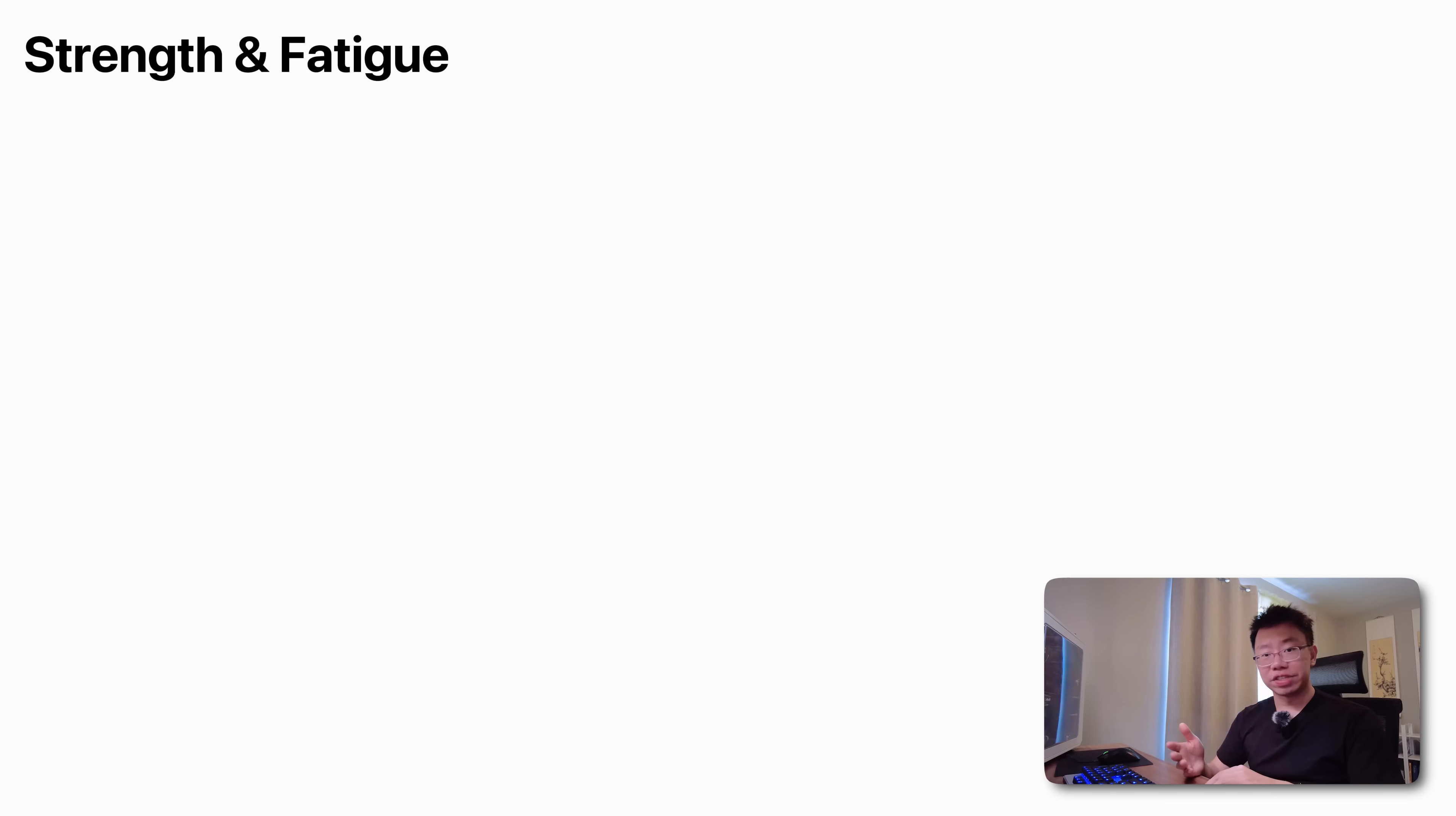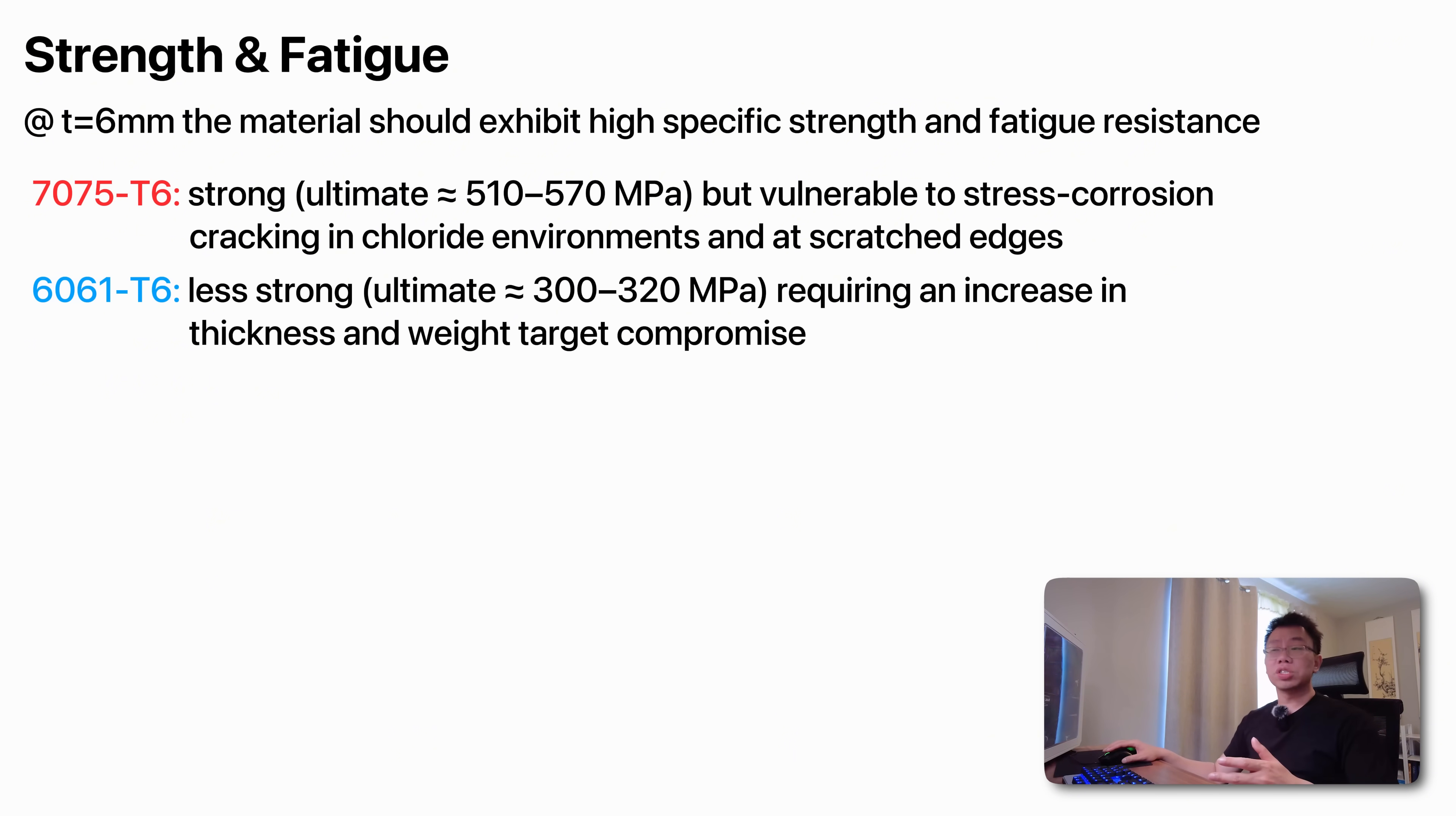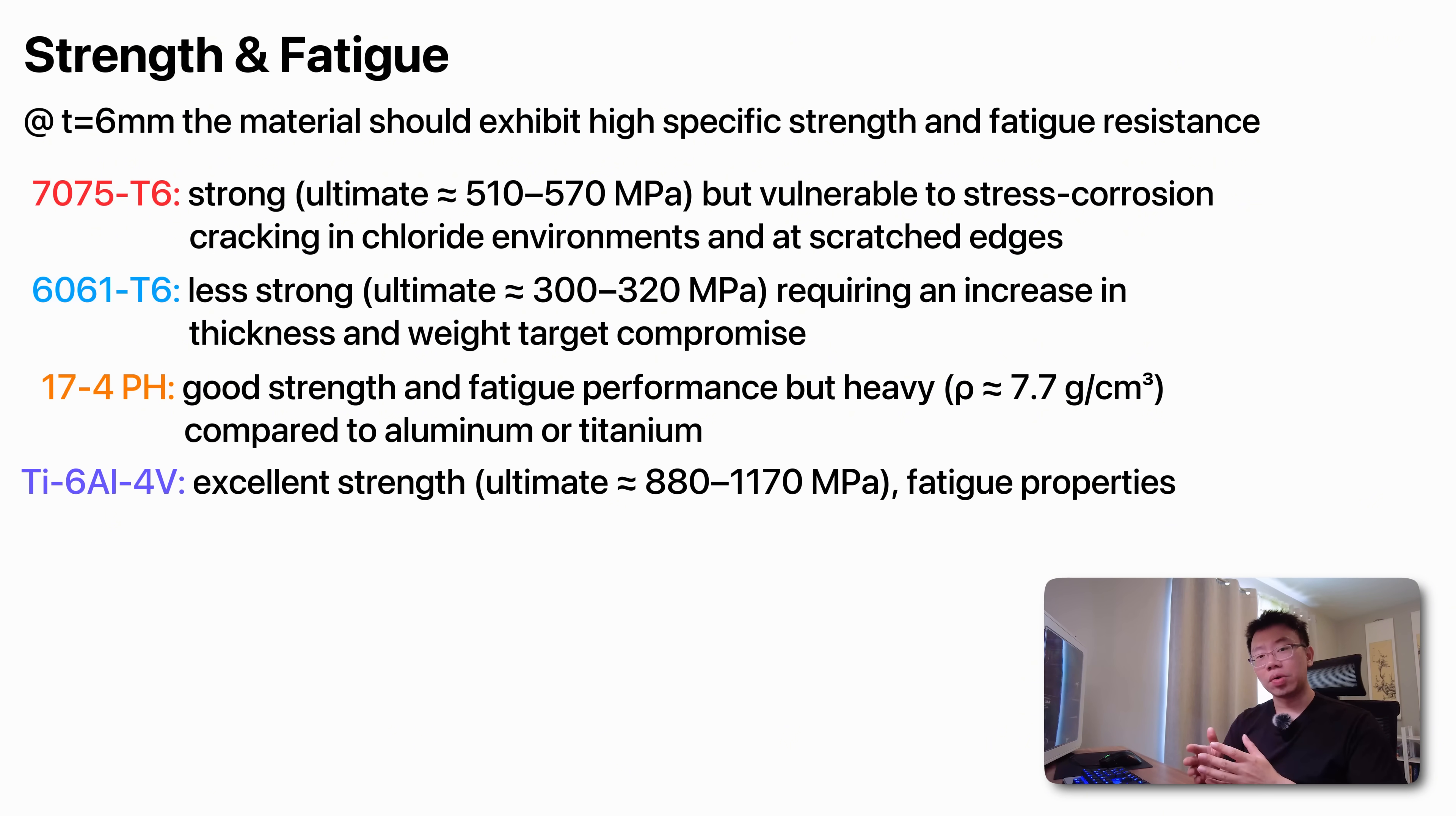Next, think about things like strength and fatigue. At a maximum thickness of 6 millimeters, we need high specific strength and fatigue resistance. 7075 T6 aluminum delivers exceptional strength but is vulnerable to stress corrosion cracking in chloride environments and at scratched edges. 6061 T6 aluminum on the other hand is less strong, which could force us to increase thickness and compromise weight targets. 174 pH stainless steel offers good strength and fatigue performance but has a density around 7.7 grams per cubic centimeter, making it significantly heavier than aluminum or titanium and therefore unattractive for aggressive UAV mass budgets. Titanium aluminum vanadium alloy combines high specific strength, excellent fatigue properties, and low density, making it an excellent choice for small lightweight UAV components when cost and manufacturability allow.